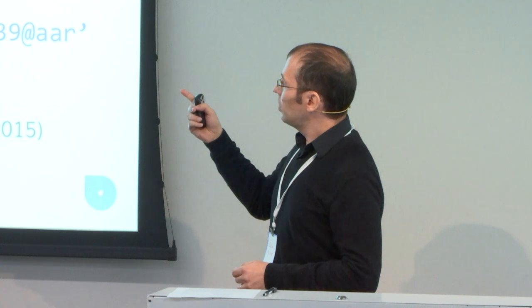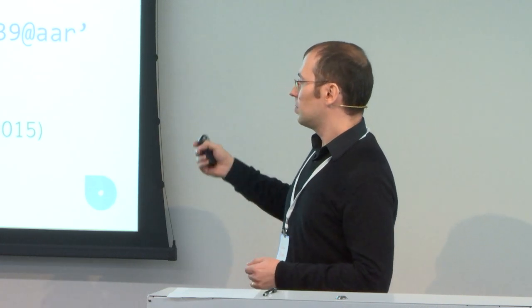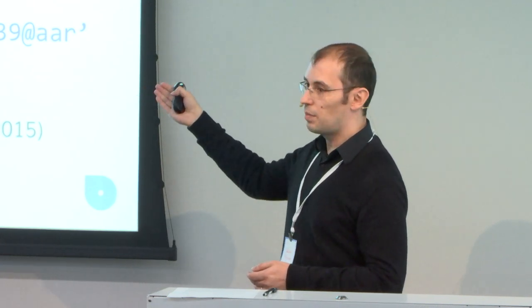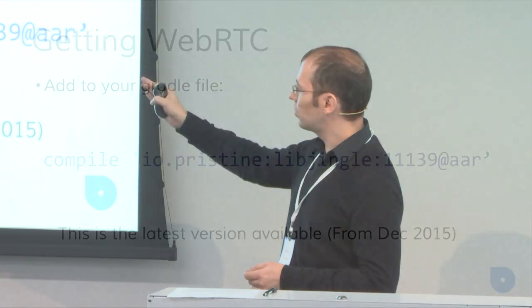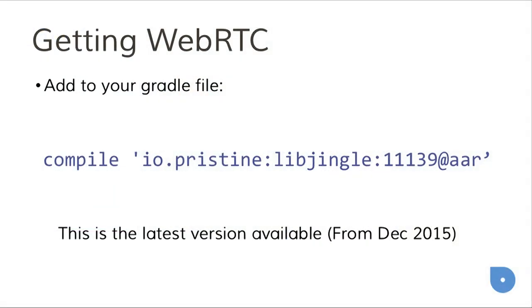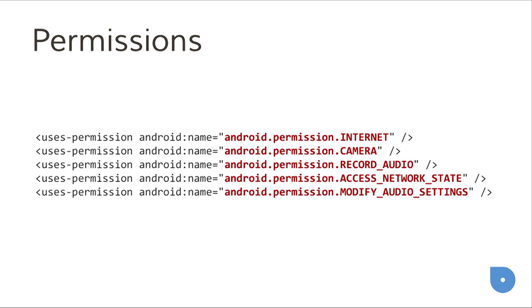To get WebRTC, the easiest way is to use a pre-build like Pristine.io. You add that to your Gradle file and you already have all the APIs needed to use WebRTC — it's only one line to add. The problem is it's not updated; the last version is from December last year. Don't forget to add the permissions needed to access the camera, internet, and microphone.